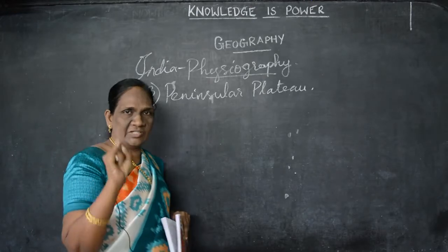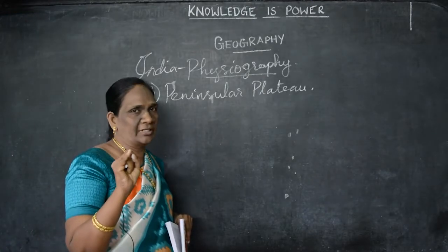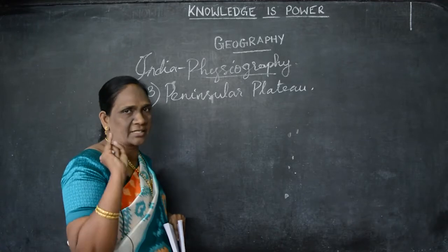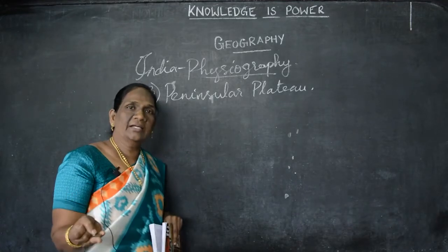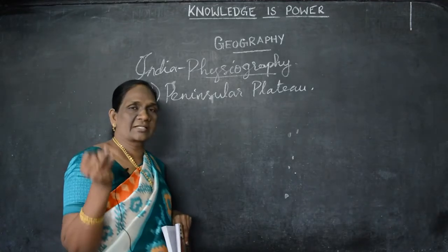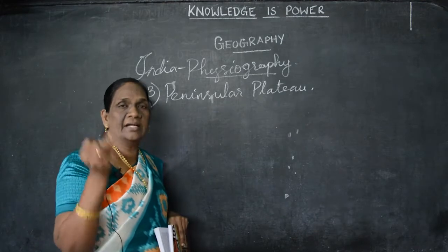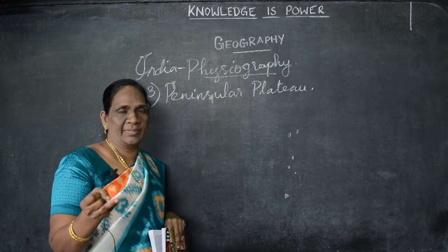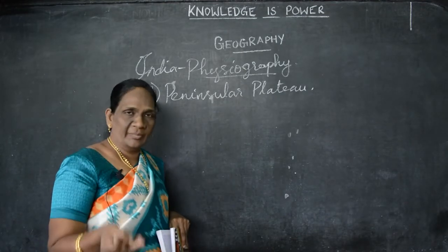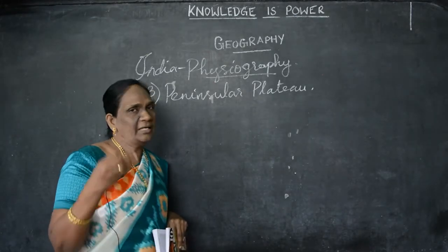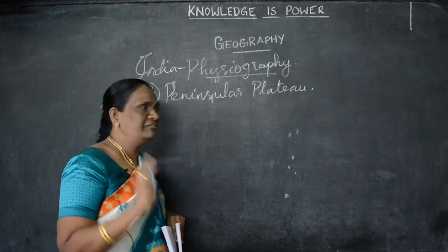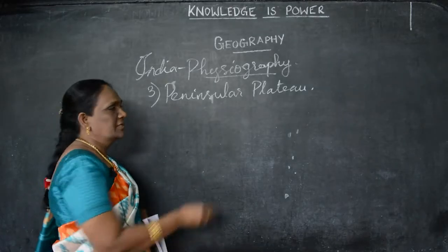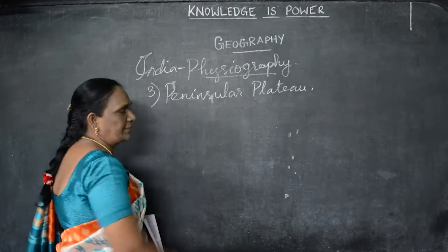The first division we saw was the Great Northern Mountain region — the Himalayas, the Great Himalayas. The second division is the Great Indian Plains: the Great Gangetic Plain, Brahmaputra Plain, Punjab and Haryana Plain, and Rajasthan Plain. Now we are going to see the third division, that is the Peninsula Plateau.